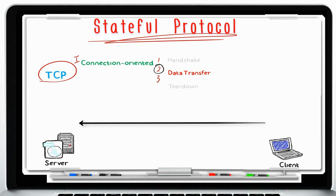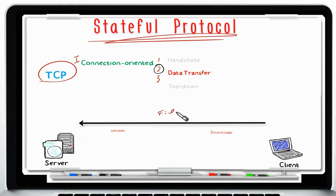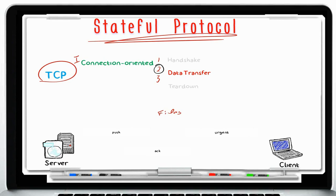Now we're ready to exchange data. The server and client can start sending actual data — the client uploads or downloads files, reads or writes files on the server. Here we see packets with push, urgent, and acknowledgement flags enabled, being exchanged between client and server. Once the client has finished uploading or downloading the requested files and does not need any more data from the server, this completes the second phase.